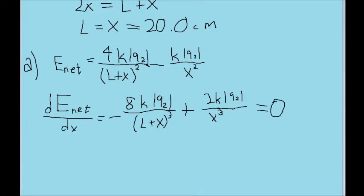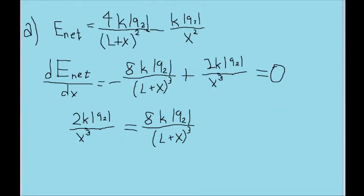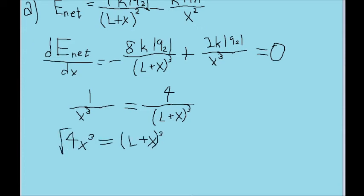So first off, let's move this negative term to the right side of the equation so that it can become positive. Now as usual, some of these variables can cancel out. The q2s will cancel out, and so will the ks. And since we've got a two in the numerator on one side, and an eight in the other, we can also make those numbers a bit smaller by dividing them both by two. So the two here becomes a one, and the eight here becomes a four. Now once again, let's bring these cubed terms into the top via cross multiplication. Now let's take the cubed root of both sides to get the cubed out of the way.